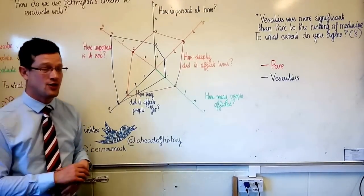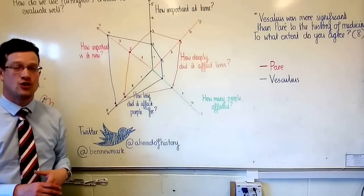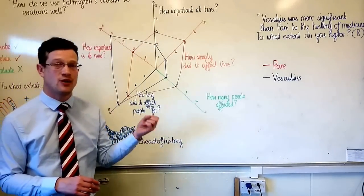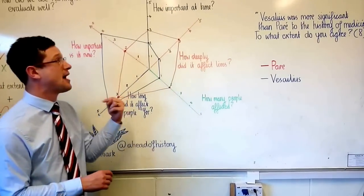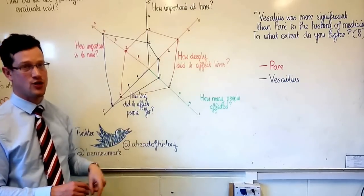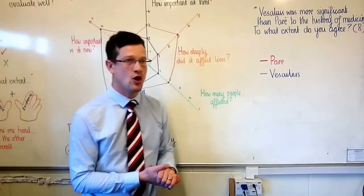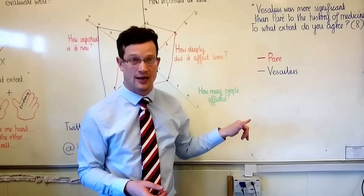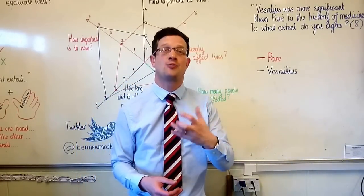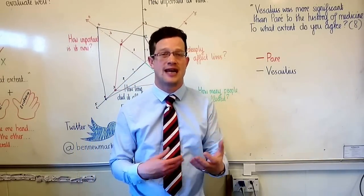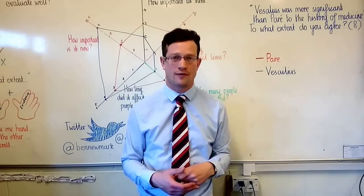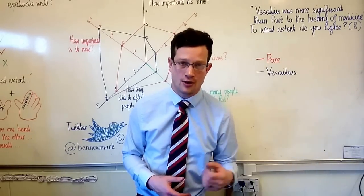Now what Partington asks us to do is to ask specific questions about an individual, an achievement or a change, and assess how important it was based on those questions. What I'm going to do is run through the contributions of Paré and Vesalius, who have given different colors, and explain my own thought process so that you can see how this works, then hopefully you'll be able to do it for other individuals and changes that you've studied soon.